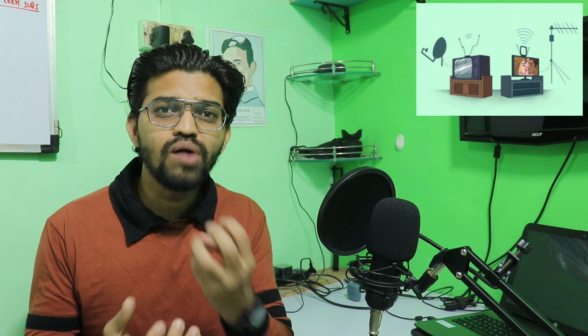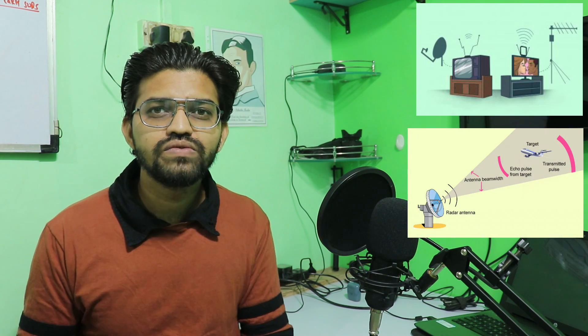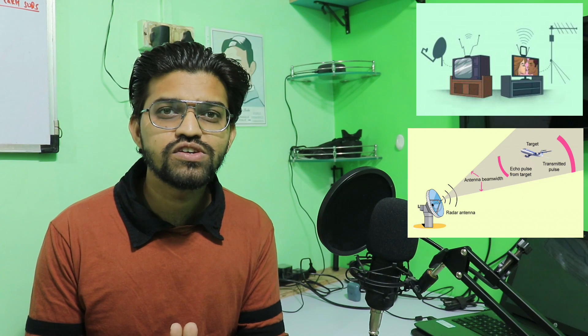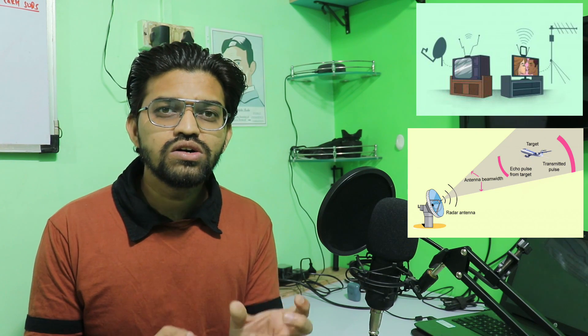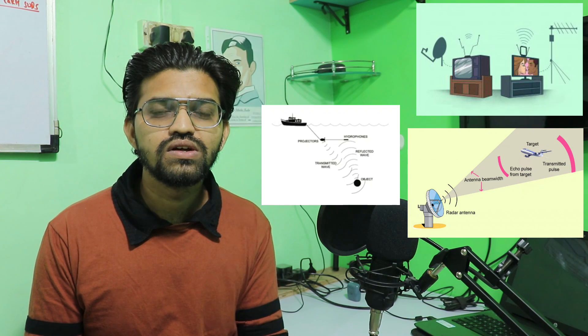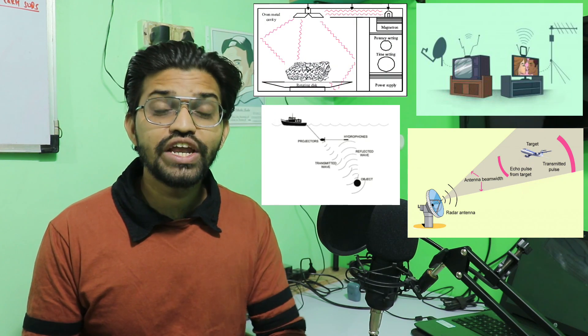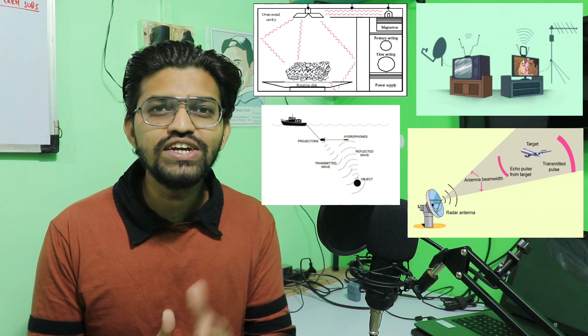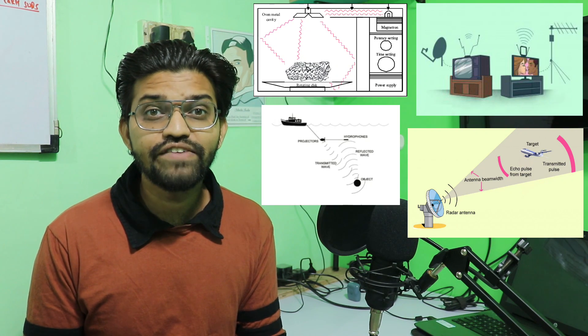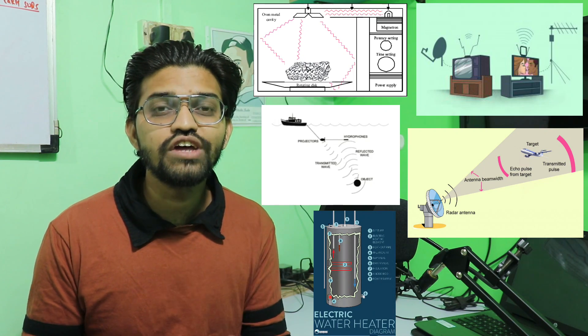Our whole life is immersed in electromagnetic radiation. The TV receives electromagnetic signals through broadcasting channels in the form of radio waves. Not only TV, but airplanes also use radio waves — radar typically uses radio waves to navigate. Sonar uses ultrasound waves to help ships navigate in water. Microwave ovens, which we use in everyday life, use electromagnetic waves, and water heaters use infrared waves.